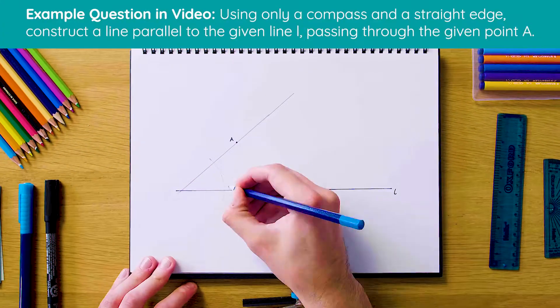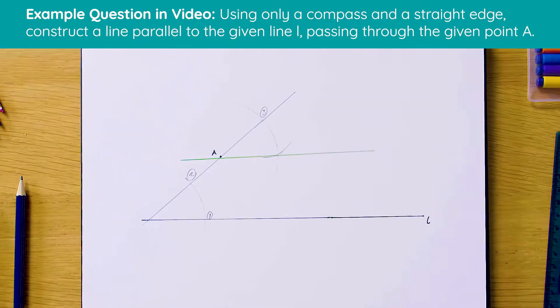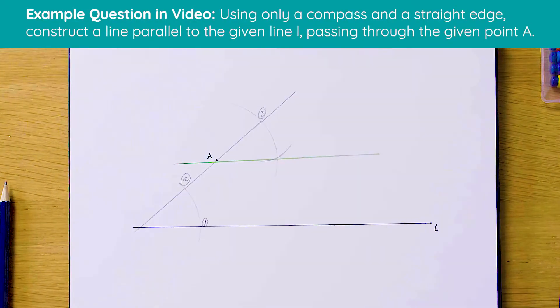Okay guys, so this is what it's going to look like once our construction is complete. As you can see, we've got our two parallel lines and the second one passes through A as we wanted. So let's just see how this is done from scratch.